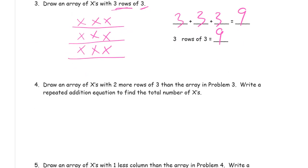Now it says draw an array of X's with two more rows of three than the array in problem three. So this is the array in problem three. So we're going to draw another array with two more rows of three than that one has. You don't need the green circle.